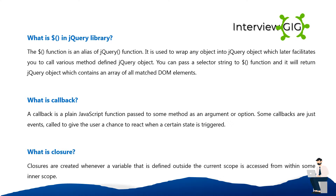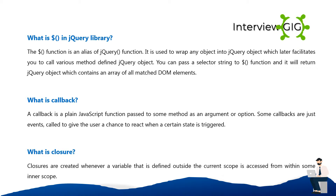What is the dollar sign ($) in the jQuery library? The dollar ($) function is an alias of the jQuery function. It is used to wrap any object into a jQuery object, which then allows you to call various jQuery methods. You can pass a selector string to the $ function and it will return a jQuery object containing an array of all matching DOM elements.